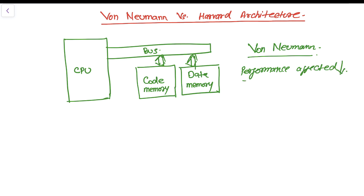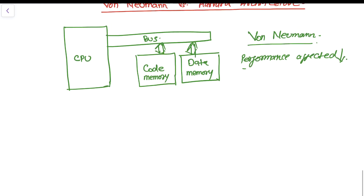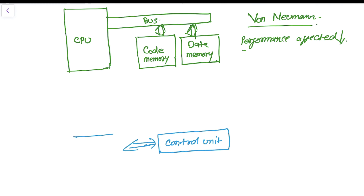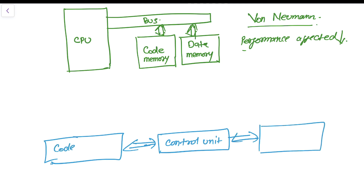There is an advantage of not having Harvard architecture — I'll tell you later. Now the question is: what is Harvard architecture? Let me draw a Harvard architecture block diagram. In Harvard architecture, we have a control unit. The control unit has a separate code memory and a separate data memory.